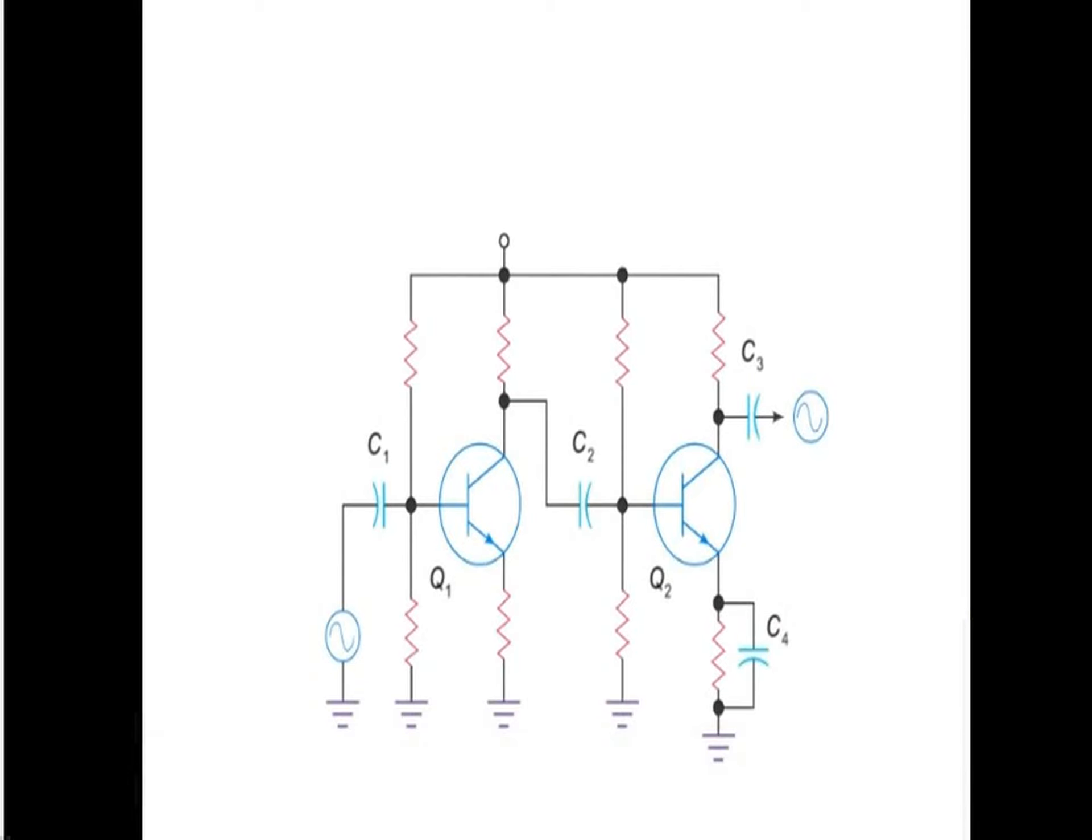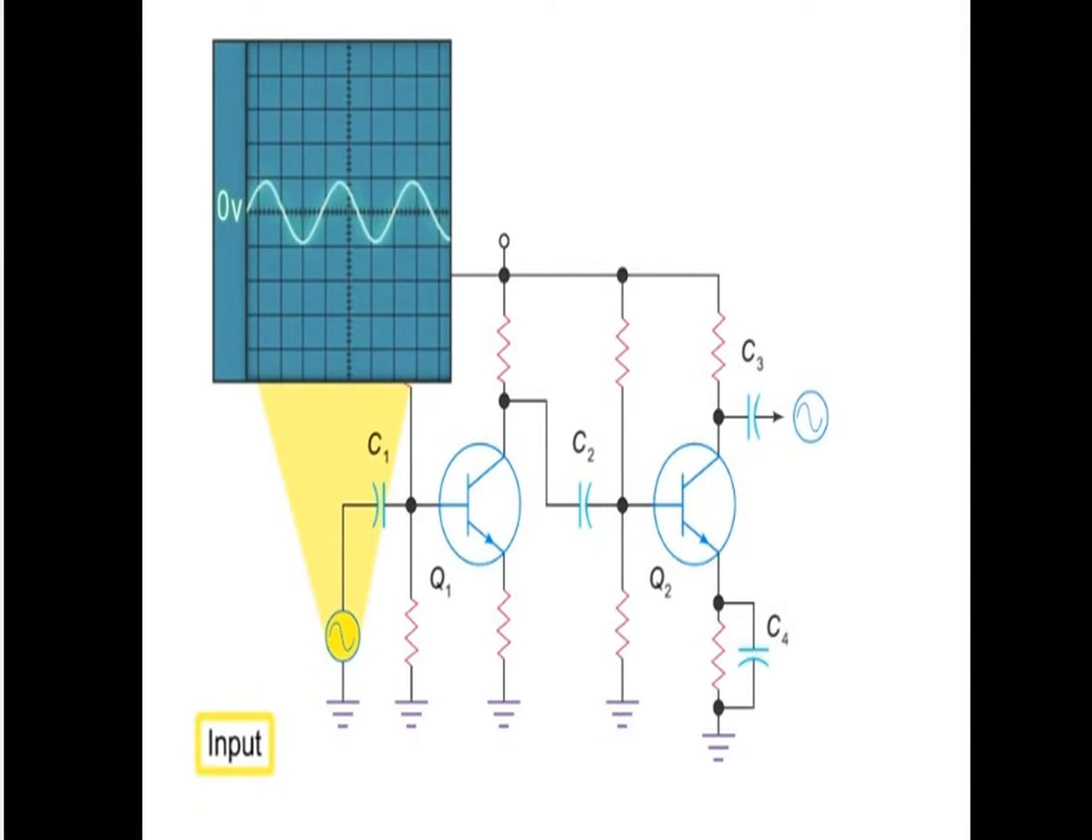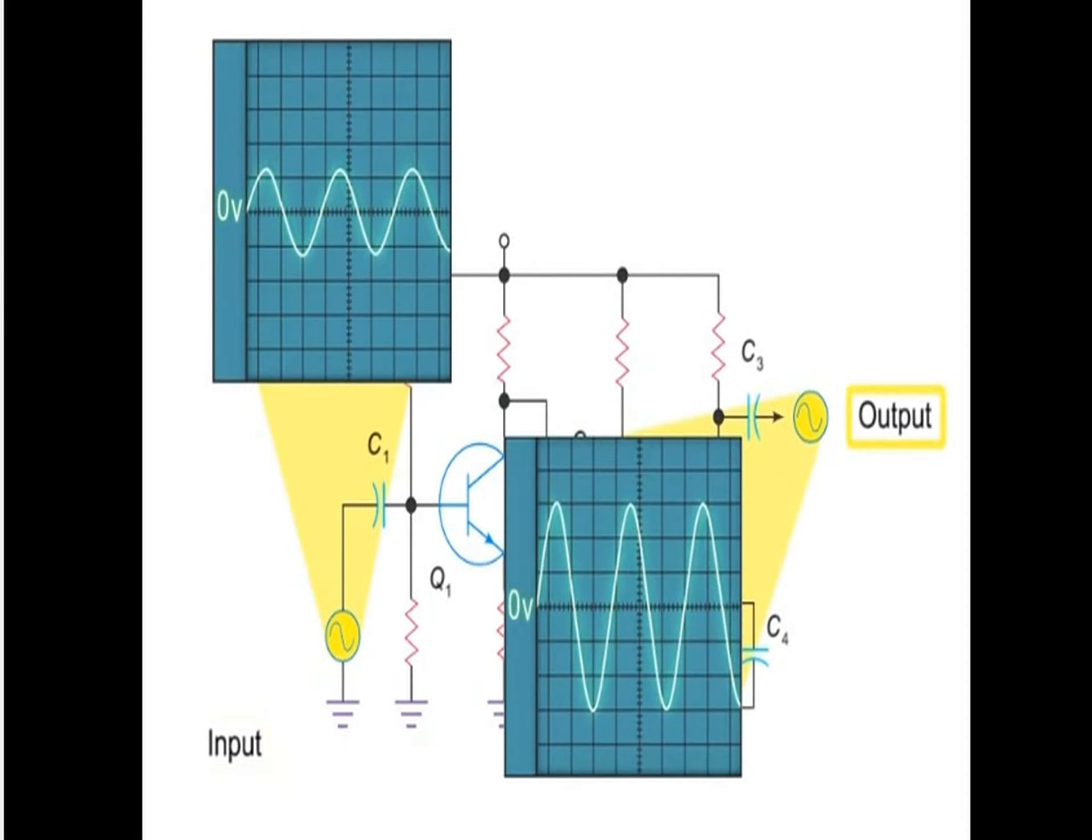This circuit represents a two-stage capacitively coupled amplifier. This amplifier successfully increases the size of an AC input signal without inverting its phase or adding any DC voltage at the output.